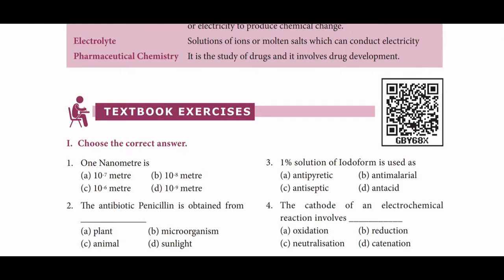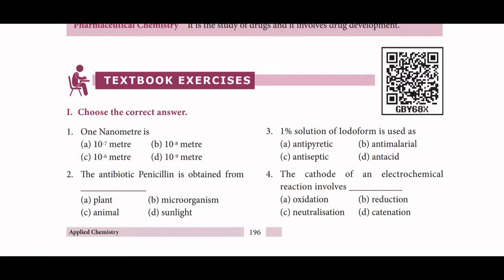First, choose the correct answer. 1 nanometer is 10 to the power minus 9 meter. The antibiotic penicillin is obtained from a microorganism. 1% solution of iodoform is used as an antiseptic. The cathode of an electrochemical reaction involves reduction; the anode involves oxidation.